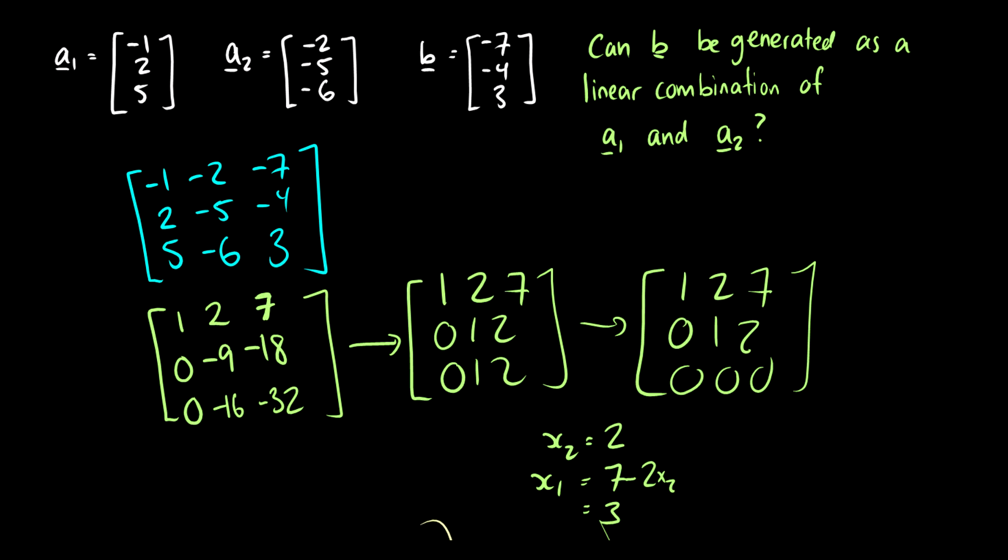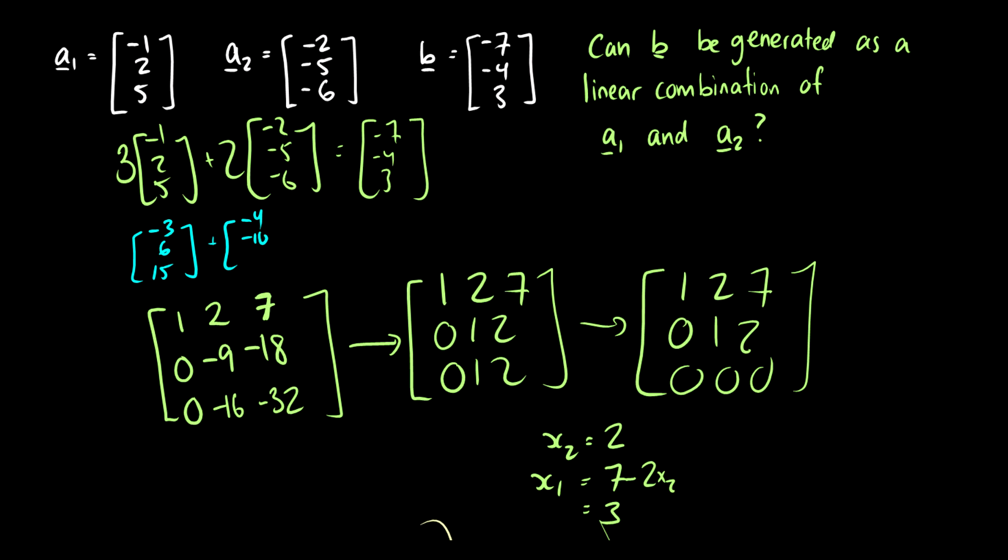So let's take 3a1. So this will be 3 times [-1,2,5] plus 2 times [-2,-5,-6]. And this should equal [-7,-4,3]. So this is going to be [-3,6,15] plus [-4,-10,-12]. So -3 minus 4 is -7, 6 minus 10 is -4, 15 minus 12 is 3. So there we go. There is our solution. So b can be generated as a linear combination of a1 and a2.